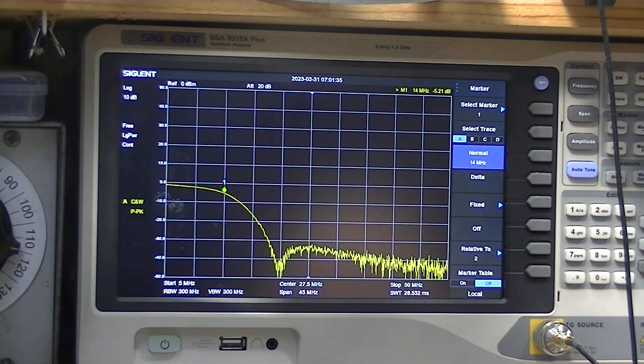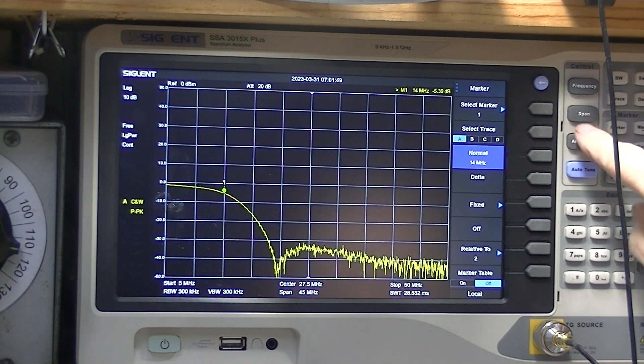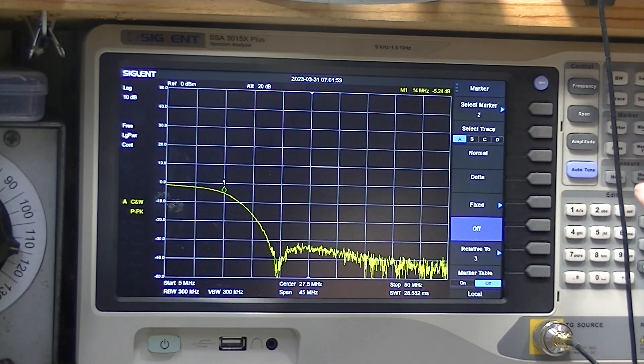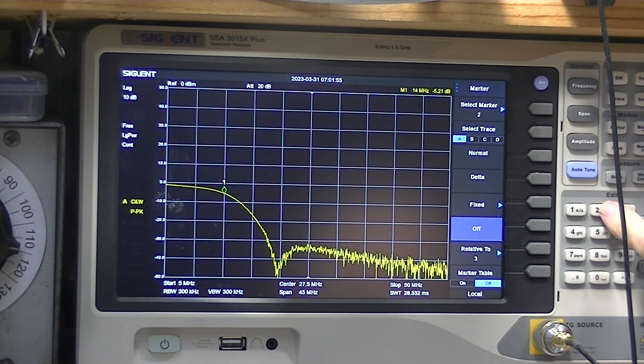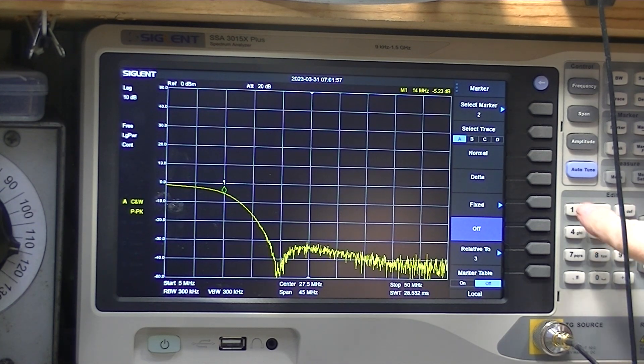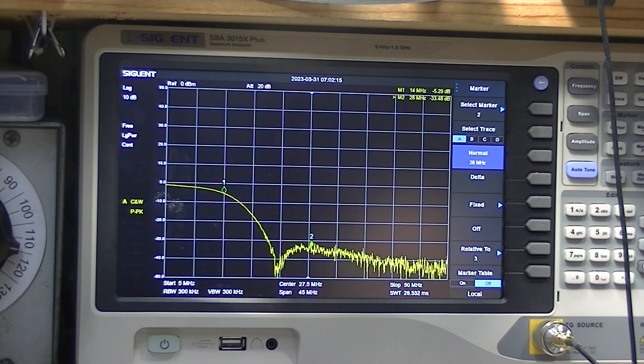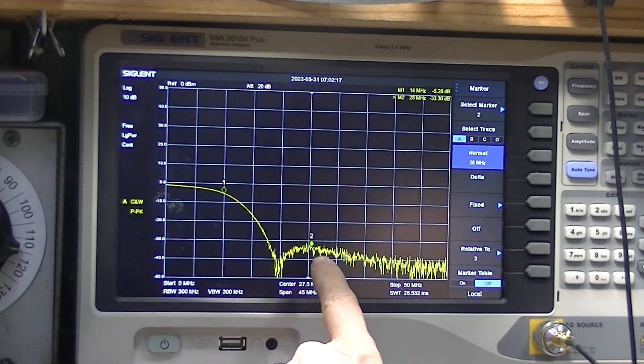So that marker's at 14 megahertz. We'll go to the next marker, marker 2, and set it at 28, the second harmonic. And we can see the difference between the first and the second marker.